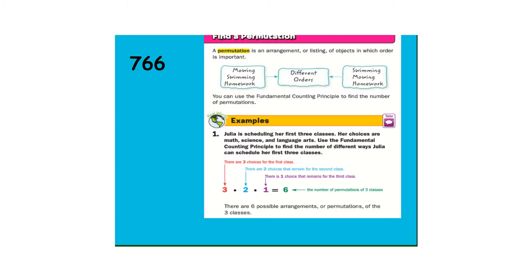Okay, 766. A permutation is an arrangement or listing of objects in which the order is important. So like on the last one, you can use the fundamental counting principle to find the number of permutations.